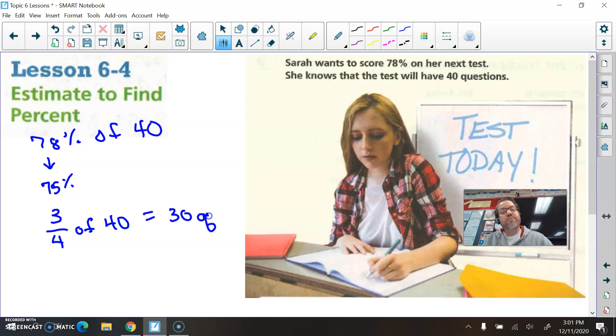Questions? So she needs to get about 30 questions correct on this test. Now if she gets exactly 30 of them correct, that's only 75% and her goal was 78%. So she knows she needs something a little bit over 30.